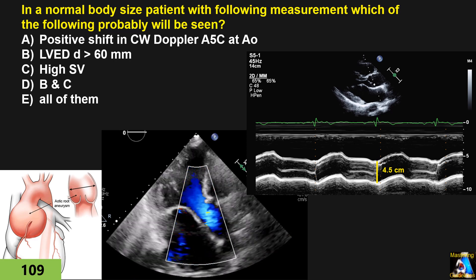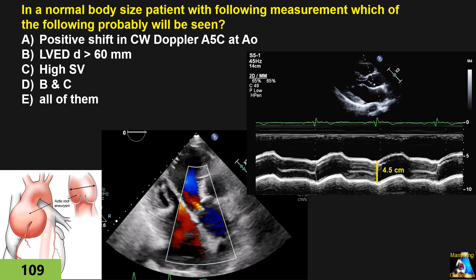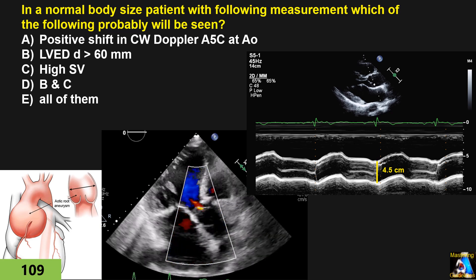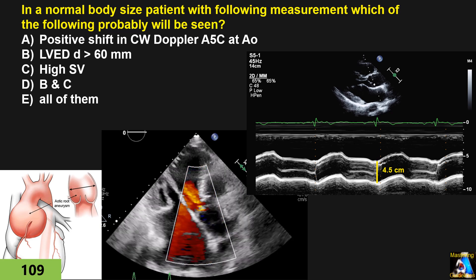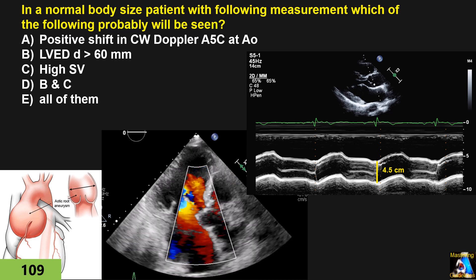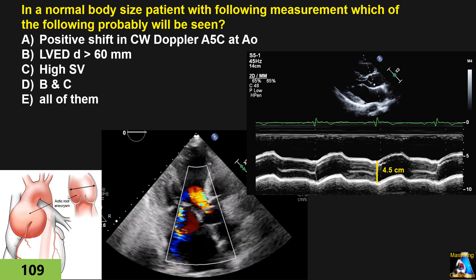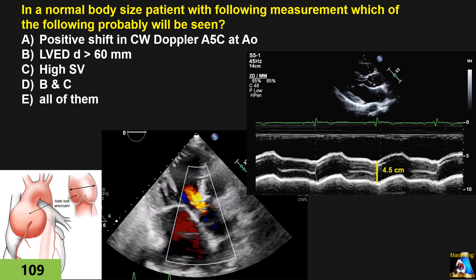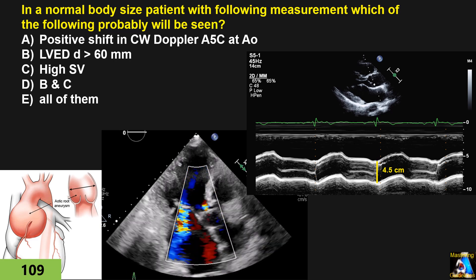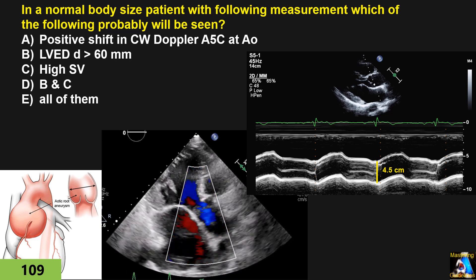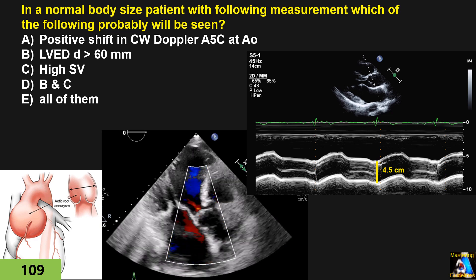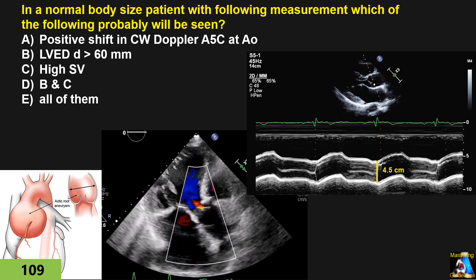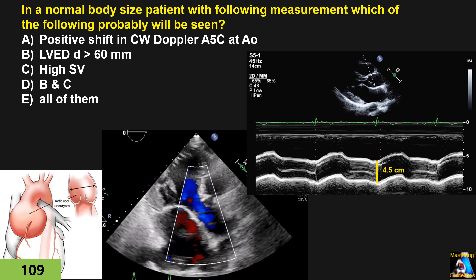I will talk more about regurgitation in two, three, or more lectures. Regarding the Doppler shift: on the apical three or five-chamber view, the jet is toward the transducer and can cause a positive shift. So now you have all the answers — let's move to the next question.